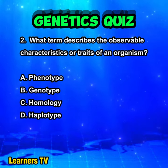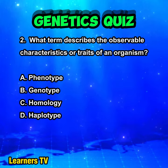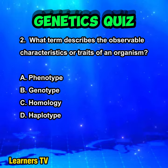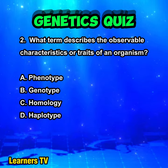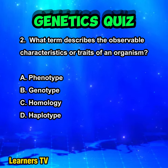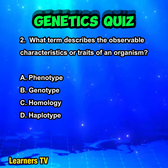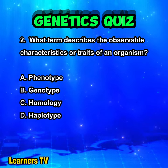What term describes the observable characteristics or traits of an organism? A. Phenotype. B. Genotype. C. Homology. D. Haplotype.